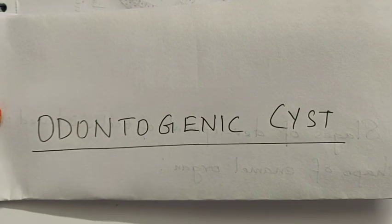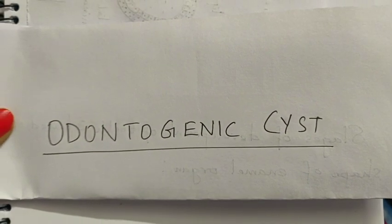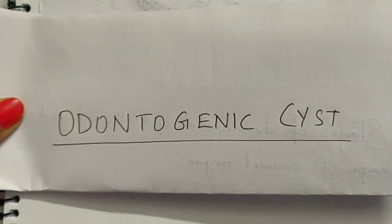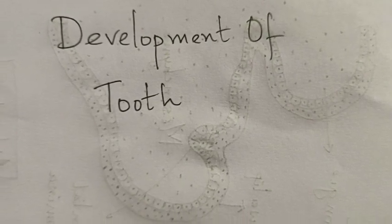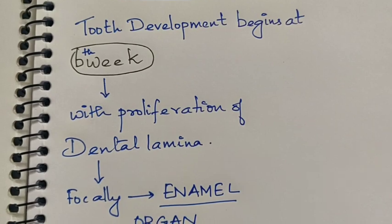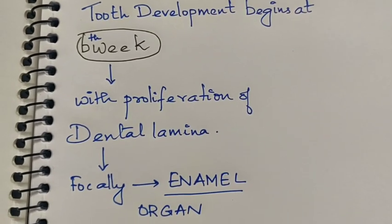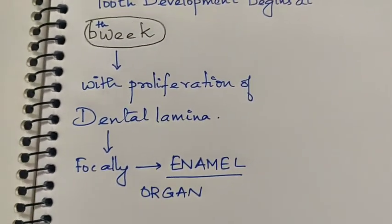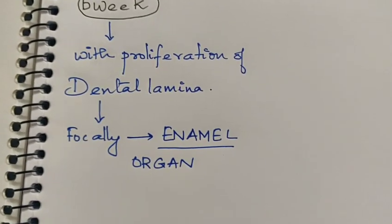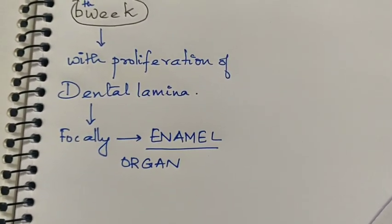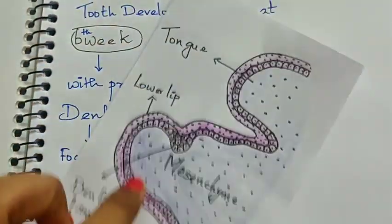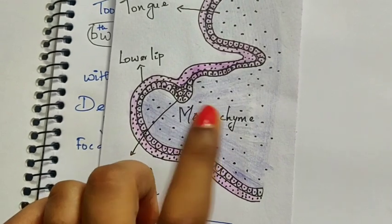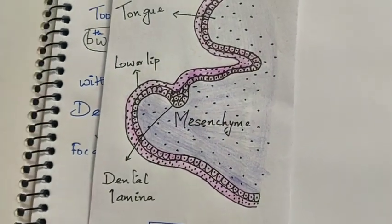The topic for discussion today is odontogenic cysts. Before directly talking about the cysts as such, we will see a brief introduction on the development of the tooth. The development of the tooth will begin at the 6th week of intrauterine life with the proliferation of the dental lamina. The dental lamina will proliferate focally and form the enamel organ, extending into the mesenchyme.